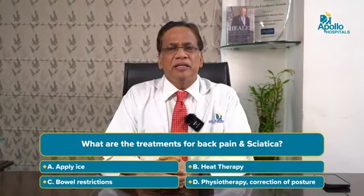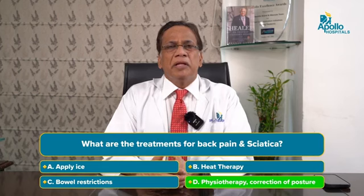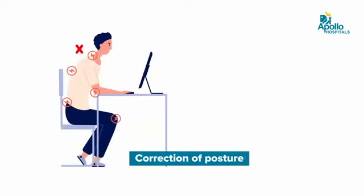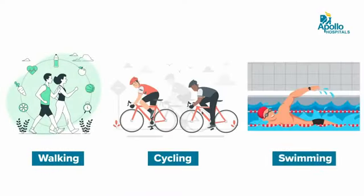Back pain can be treated with simple remedies like physiotherapy, strengthening of the muscles, and most importantly, correction of your posture. When you sit on a chair, the lower back should be supported by the chair, because that is the most important part. If you keep the muscles around the spine strong, they maintain the normal shape of the spine, which will prevent back pain. Those who have back pain should do regular exercises — the best exercises would be walking, cycling, or swimming.